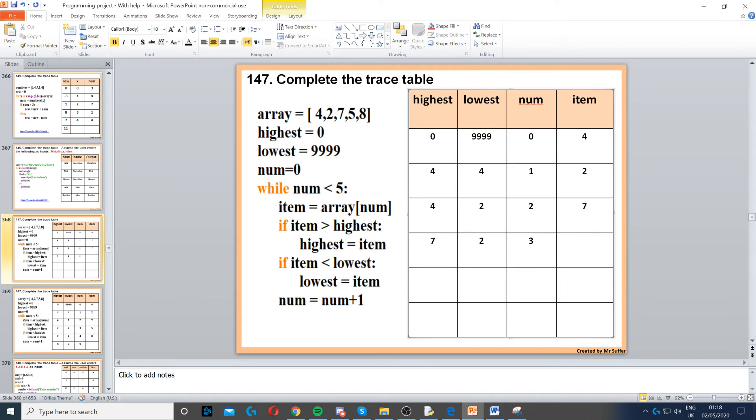Next num is 3. While 3 is less than 5, that's true, so next index is 5. 5 is not greater than 7, so we keep highest as 7. 5 is not less than 2, so we keep lowest as 2.